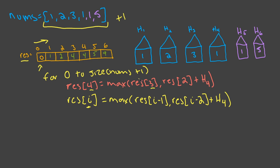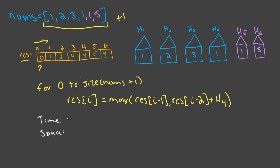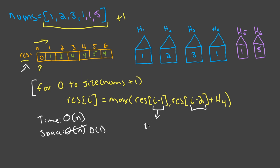The time and space complexity are both O(n) — O(n) time because we iterate through every num, and O(n) space because of the result array. But this problem can actually be solved in constant space, by noticing we only ever access i-1 and i-2. We can just keep track of those in variables and update them as we go.